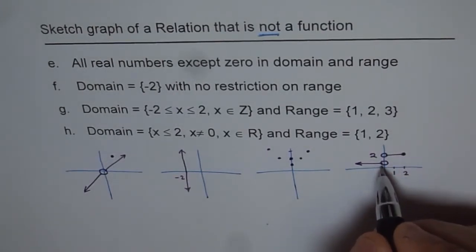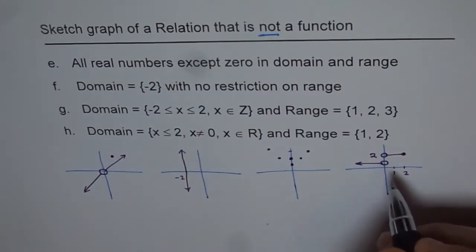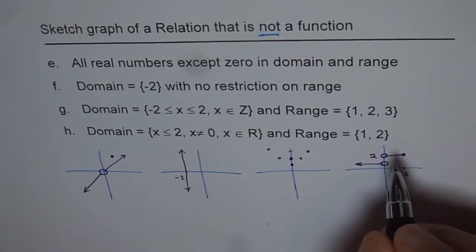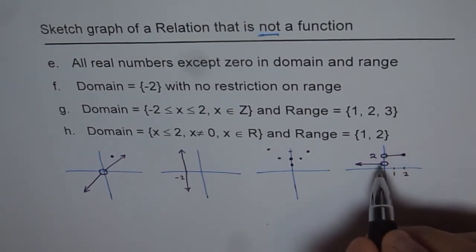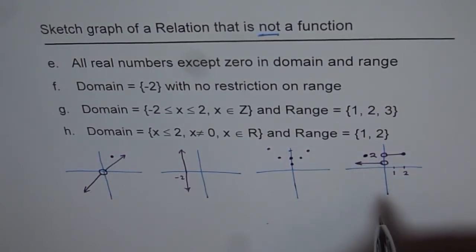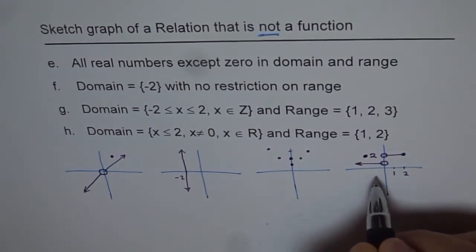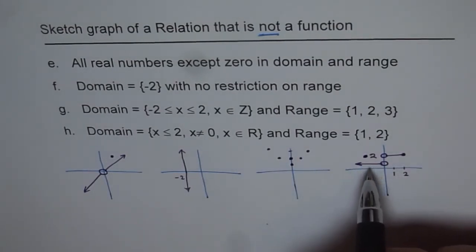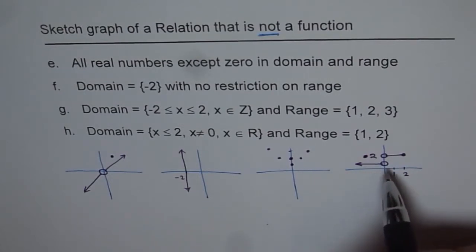But now, one more thing, and that is it should be a relation which is not a function. And the one which we have sketched just now is basically a function. So to ensure that it is not a function, we need to introduce a point here somewhere, so that it doesn't contradict what is given to us, and it makes this function not a function. It makes a relation, just a relation, not a function. So that additional point helps us to do that.